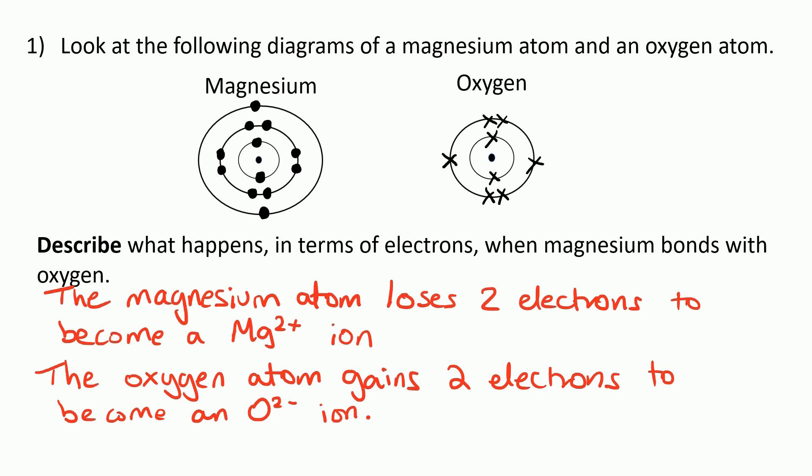We definitely don't want to be talking about sharing electrons because it's a metal and a non-metal, so we're talking about ionic bonding. Sharing is with covalent bonding. The word to use is transfers, so two electrons have been transferred from magnesium to an oxygen atom.